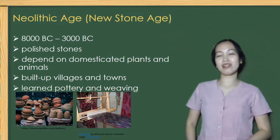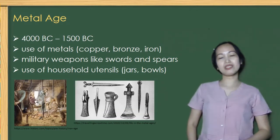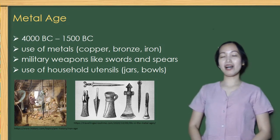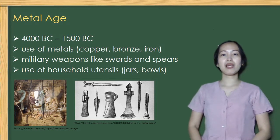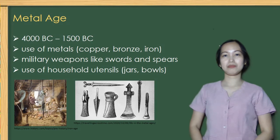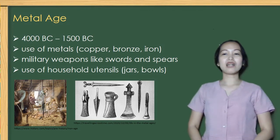People kept on discovering things for their own convenience, so the next period happened — it is called the Metal Age. The use of metals such as bronze, copper, and iron produced a new historical development from the cradle civilizations of Egypt, Mesopotamia, Persia, including India, and China, which later spread throughout Asia. During this age, agricultural tools were developed with bronze, such as plows and sickles, military weapons like swords, spears, and shields, as well as household utensils like jars, bowls, and cups.